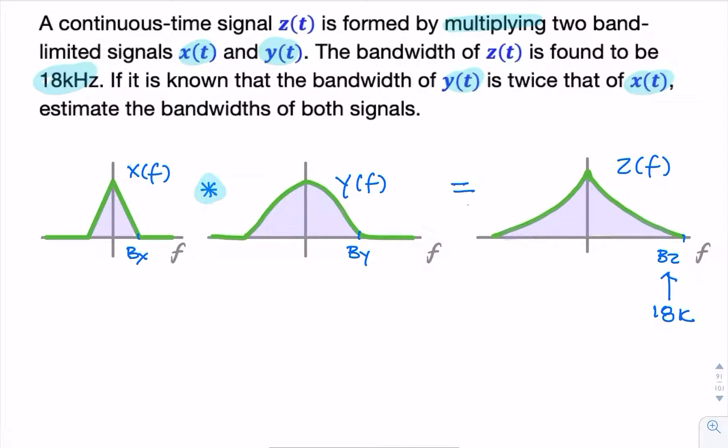You can think of that as either because of the convolution, or remember the rules of thumb, the heuristics we agreed on, that when you multiply in the time domain, the spectrum, or the bandwidth of the resulting spectrum, will be equal to the sum of the bandwidths of the two signals.